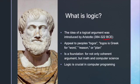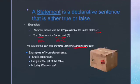This is Aristotle. An outline of what I'm going to cover in this section: statements and truth values, compound statements, variables, and logical connectives. A statement is a declarative sentence that is either true or false. For example, 'Abraham Lincoln was the 16th president of the United States' is a true statement. 'The Blues won the Super Bowl' is false because the Blues are NHL and the Super Bowl is NFL. No statement is both true and false. Non-statements — things like opinions ('she is super cute'), commands ('get your feet off the table'), or questions ('is today Wednesday') — are neither true nor false.